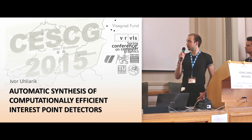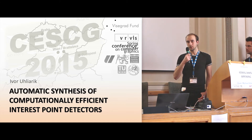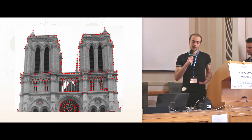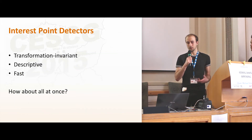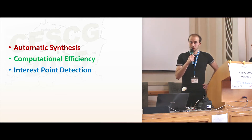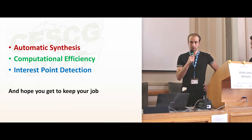In general, to detect objects in images we use interest point detectors, but it usually takes researchers a long time to design them. We have developed a system that designs them automatically. They are transformation-invariant descriptors able to run on a mobile phone. We will also show how our automatically created algorithms have outperformed man-made algorithms. I hope to see you there. Thank you.